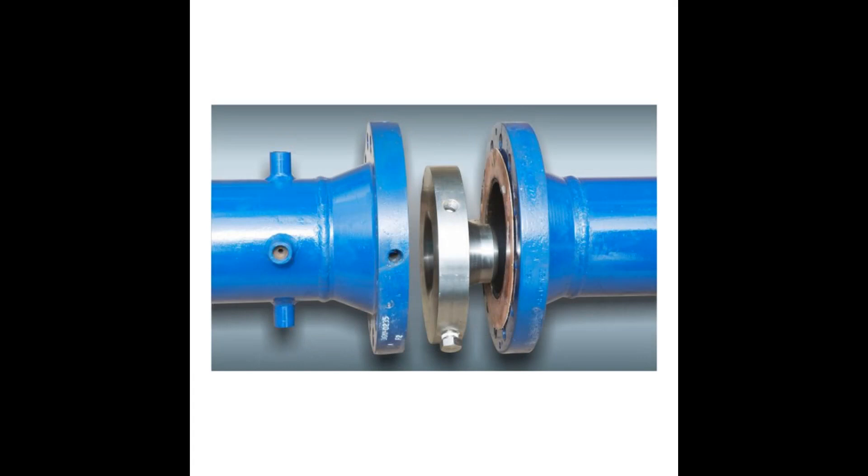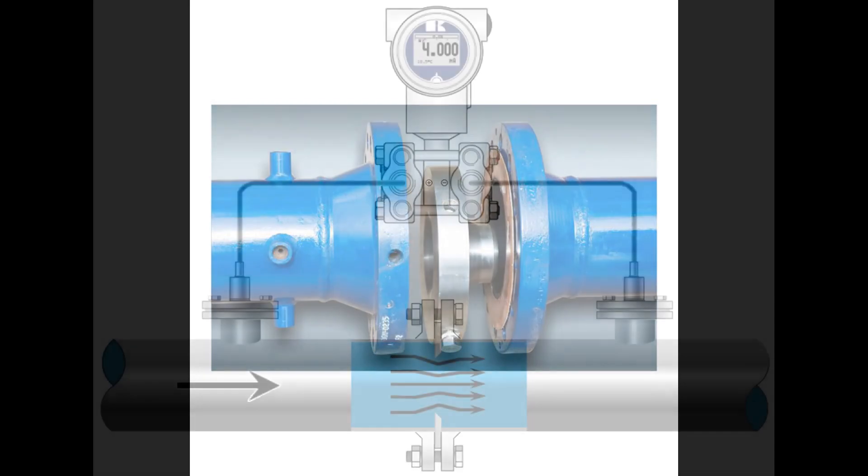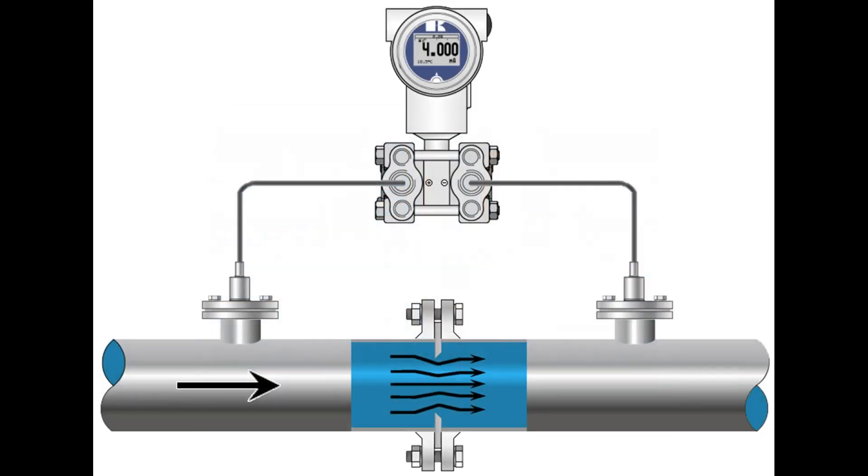Here's a detailed explanation on how a differential pressure transmitter measures flow. The primary element is installed in the pipeline, causing a restriction in the flow. As the fluid flows through the restriction, its velocity increases, resulting in a pressure drop across the primary element.